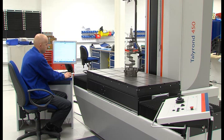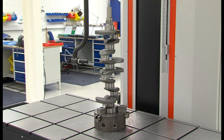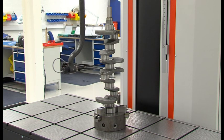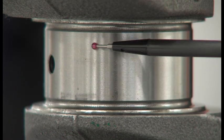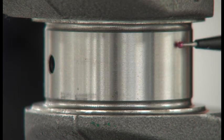The Talyron 450 is capable of measuring complicated components such as crank shafts. It can measure roundness, cylindricity, straightness of the main and pins, and also the flatness of the thrust faces.